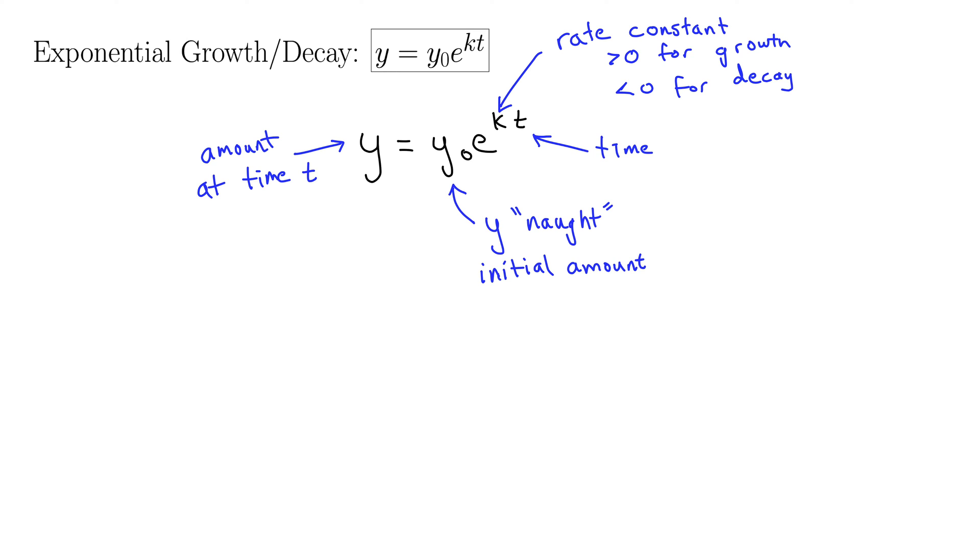So what we'll do next is steal some of the thunder from calc 2 and derive this equation from a differential equation. So let's start with the differential equation: y prime of t equals k times y of t. So let's see what this tells us. y prime of t is the rate of change for y of t.